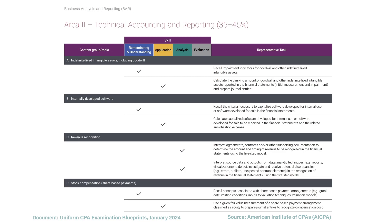Now we move on to area two: Technical Accounting and Reporting. This takes the financial statement rules for particular accounts and tests them. First, we have indefinite-lived intangible assets — for example, goodwill. We need to know how we impair goodwill and other indefinite-lived intangible assets.